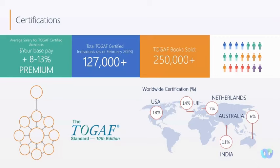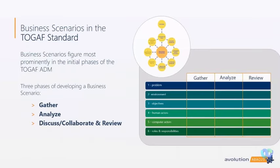One of the key things about standards and frameworks is whether there's a community, an audience you can reach out to, a body you can speak to and get answers from — TOGAF is right up there. When thinking about roadmaps in TOGAF, we can think of different business scenarios at different points in time. TOGAF has elements that contribute towards this: we first gather information, then analyze it, and then review and collaborate on that content.